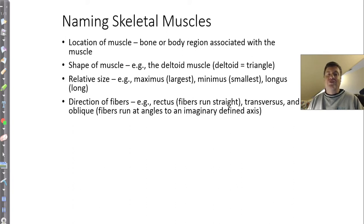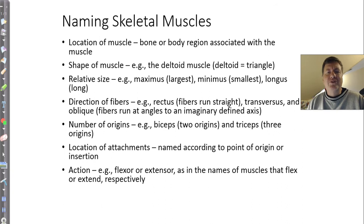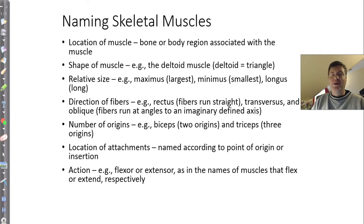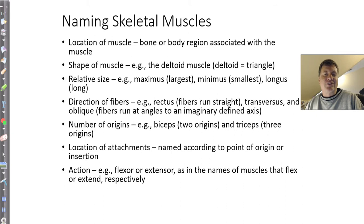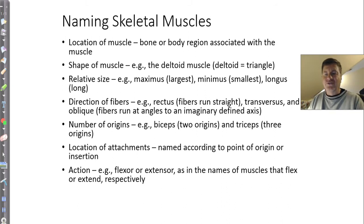We talk about direction of fibers: rectus means straight, transversus means across, oblique means at an angle. So when you hear these terms, think about what they mean. The rectus abdominis refers to muscles running straight down a plane in the abdomen. We also describe muscles based upon their number of origins — if you see biceps, triceps, or quadriceps, you know this. Location of attachments is another naming method. And even the action: if you hear flexor or extensor, it tells you what the muscle does — extensors extend, flexors flex.